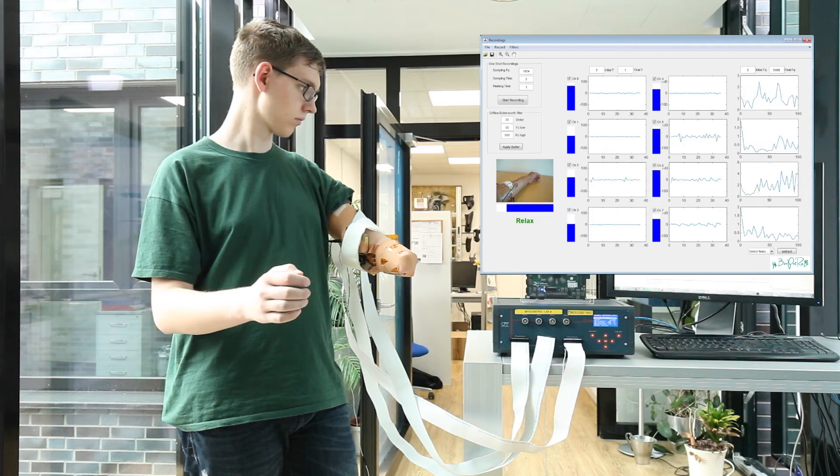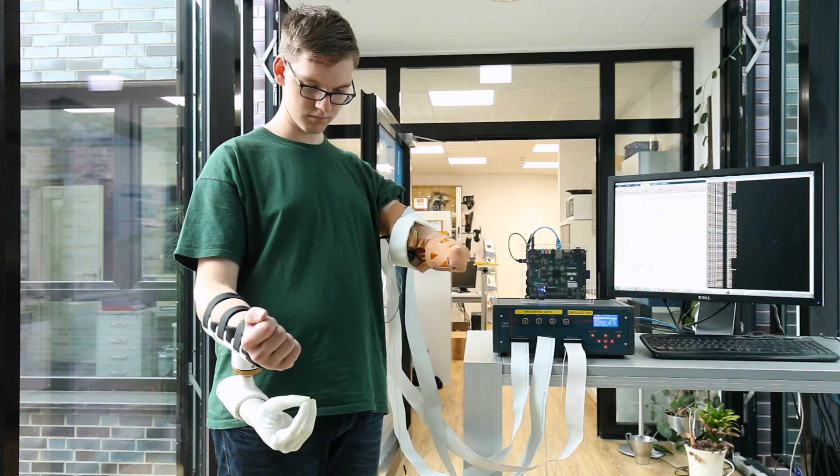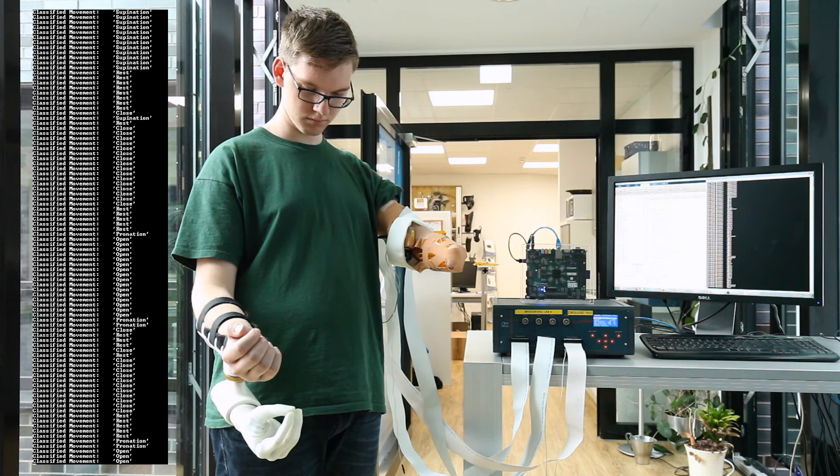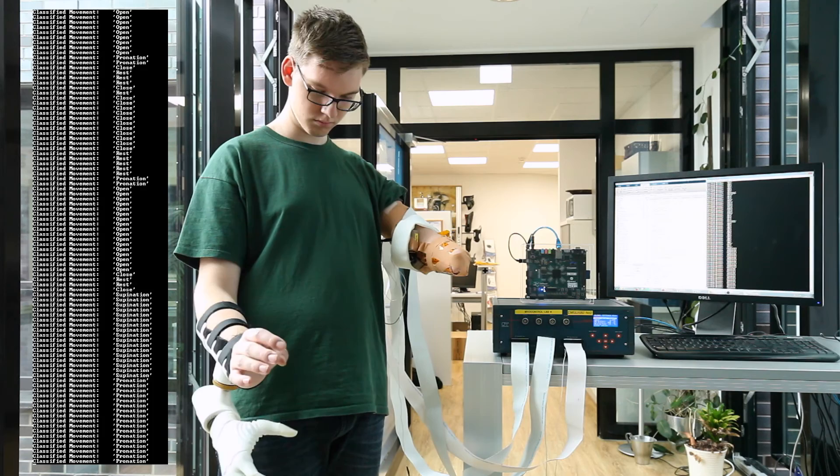In the classification phase, our test subject can finally start using the prosthesis. The EMG signals are classified and the predicted movement is sent to the prosthesis. On the left side, you can see the debug output of our system. Small misclassifications are filtered by a majority vote.